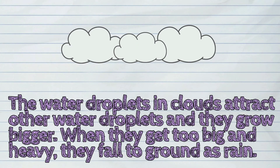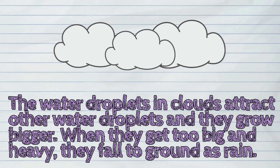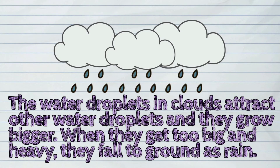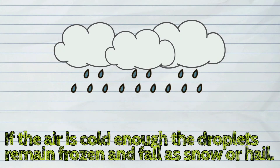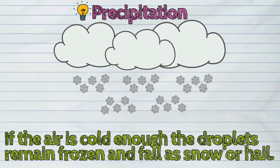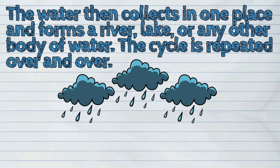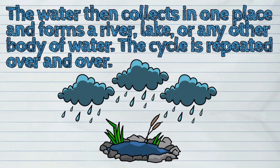The water droplets in clouds attract other water droplets and they grow bigger. When they get too big and heavy, they fall to the ground as rain. If the air is cold enough, the droplets remain frozen and fall as snow or hail. This process is called precipitation. The water then collects in one place and forms a river, lake, or any other body of water. The cycle is repeated over and over.